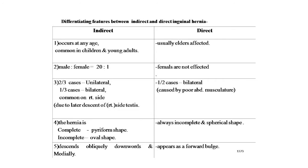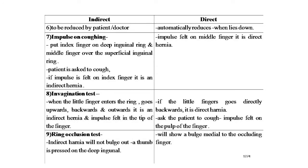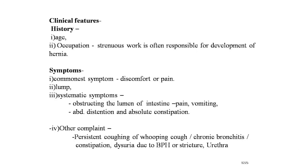Indirect hernia descends obliquely downwards and medially; direct hernia appears as a forward bulge. Indirect hernia needs to be reduced by the patient or doctor; direct hernia automatically reduces when lying down. Cough impulse test: index finger on the deep inguinal ring and middle finger over the superficial ring — if impulse felt on the index finger it is indirect hernia; impulse on the middle finger indicates direct hernia. Invagination test: if the little finger going upward, backward, and outward feels impulse at the tip it is indirect hernia; if the finger goes directly backward with impulse on the pulp it is direct hernia. Ring occlusion test: pressing the thumb on the deep inguinal ring — indirect hernia will not bulge out; direct hernia will show a bulge medial to the occluding finger.